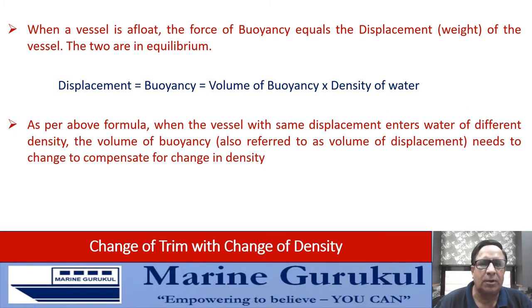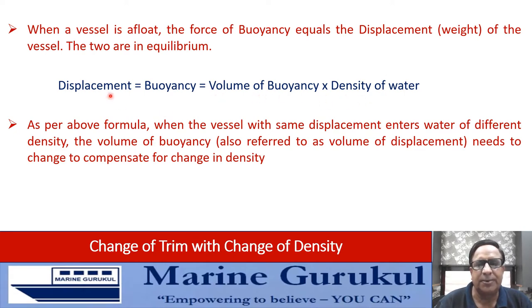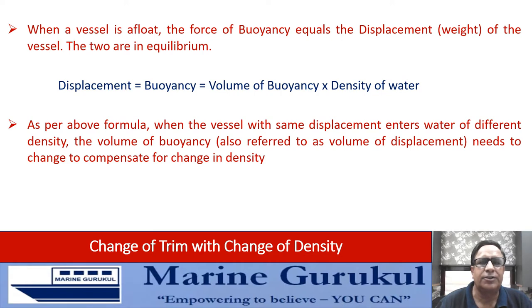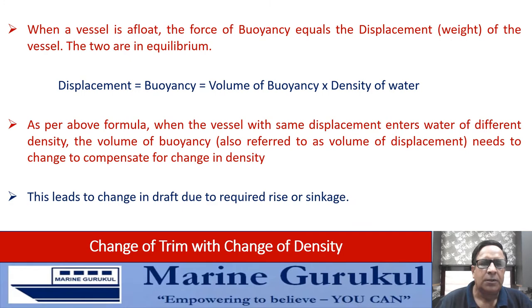When this vessel with the same displacement goes to water of a different density, the volume of buoyancy undergoes a change to compensate for the change in density, keeping the product — volume times density — equal to the same displacement. As a result, the change in volume of buoyancy leads to a change in draft, causing either rise or sinkage of the vessel.